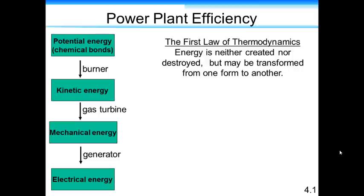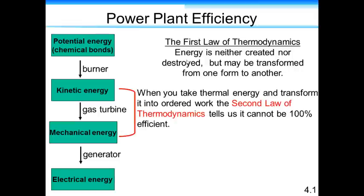Let's apply the first law of thermodynamics to power plant and its efficiency. So energy can be transformed from one form to another. And you can look at the whole process of producing power as potential energy in the chemical bonds of the fuel, whether it's natural gas or coal. That energy is burned, creating kinetic energy, which moves a gas turbine. That's mechanical energy. And that movement generates electricity.